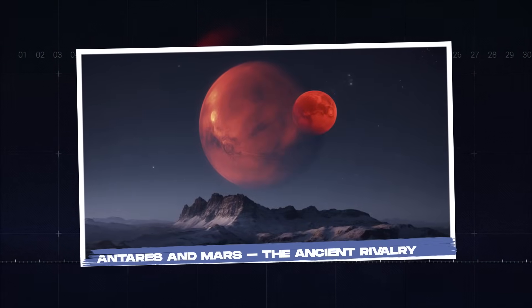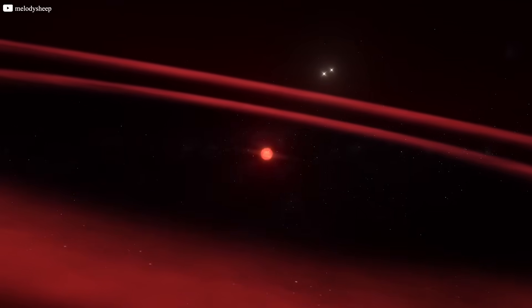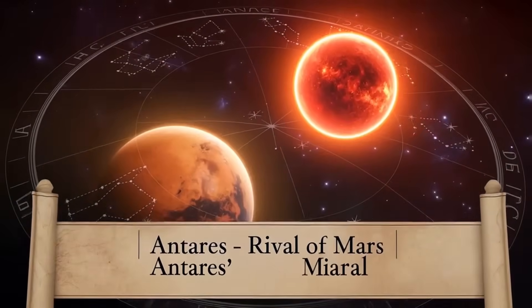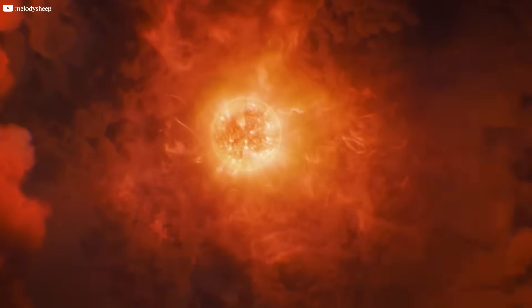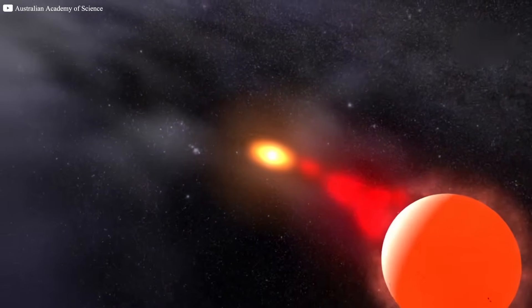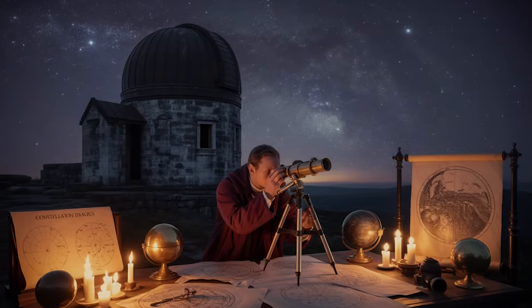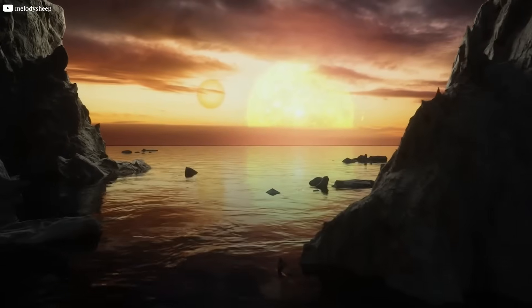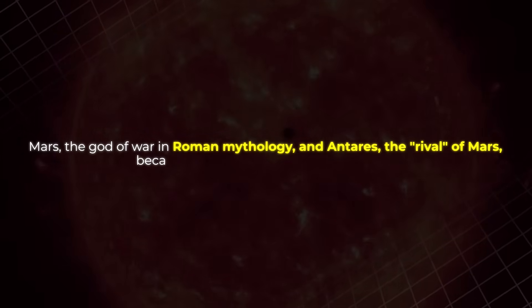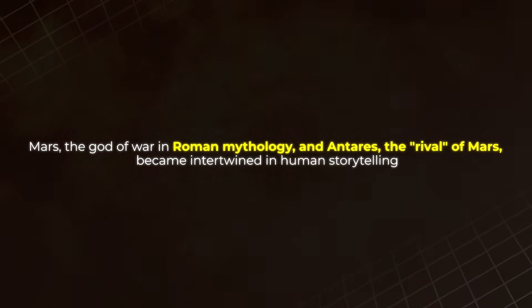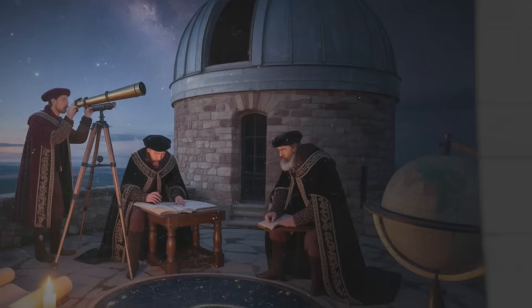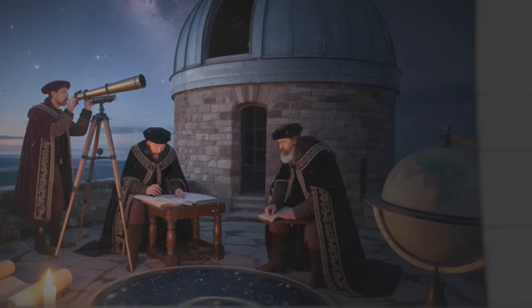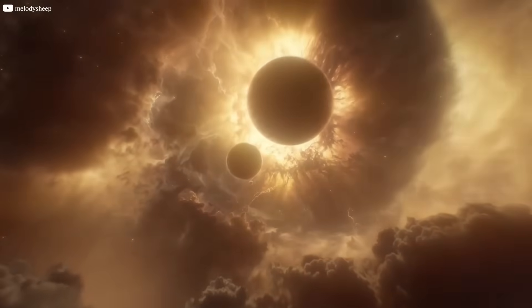Antares and Mars, the ancient rivalry. The name Antares itself carries a piece of history. In ancient Greek it means rival of Mars, a name that has stood the test of time due to its striking resemblance to the red planet. The star's deep red hue, which mirrors the color of Mars, caught the attention of early astronomers who saw in it a connection to their world. Mars, the god of war in Roman mythology, and Antares, the rival of Mars, became intertwined in human storytelling. This ancient linkage between the two red celestial bodies is a fascinating reflection of how people throughout history have looked up to the night sky, finding meaning and patterns that connect the cosmos to their own lives.